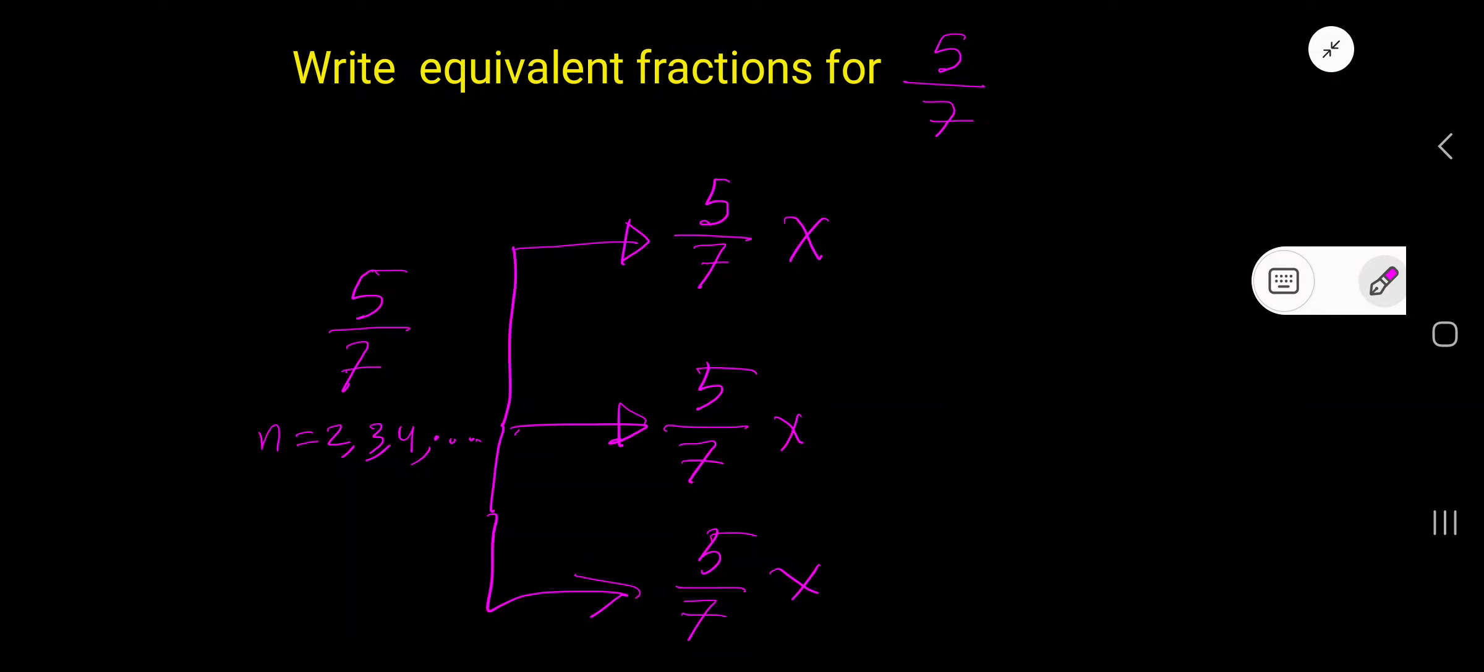Write equivalent fractions for 5 over 7. To find the equivalent fraction of 5 over 7, you need to multiply both numerator and denominator by the same number. The value of n starts from 2.